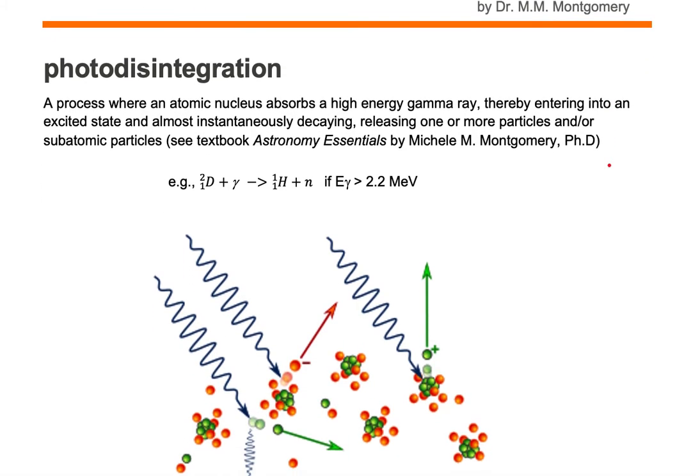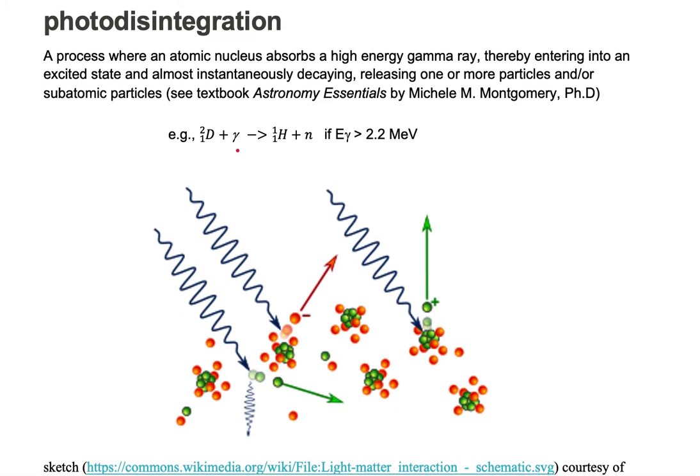Let's take a look at an example of photodisintegration. Here we have a deuteron, which is a particle that has a proton and a neutron in the nucleus. This deuteron absorbs a high-energy gamma ray, and the gamma ray has to have at least 2.2 MeV of energy.